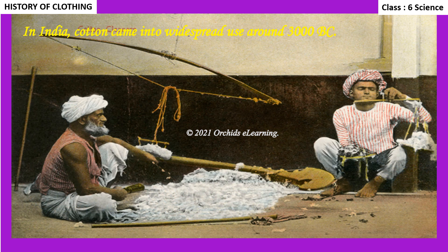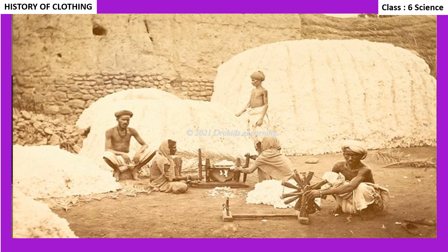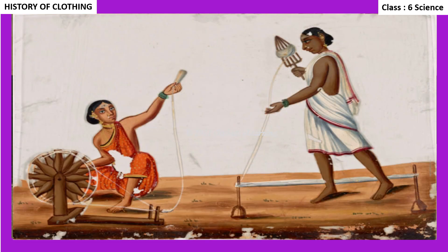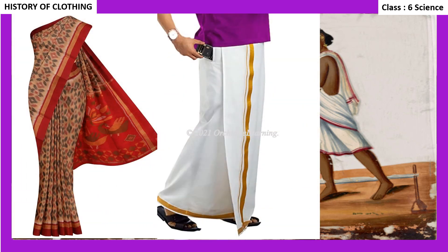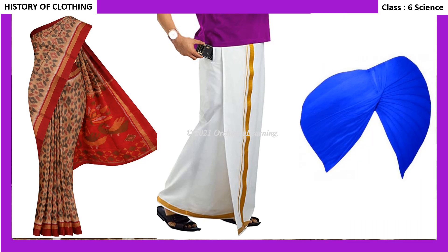These early fabrics were not stitched — they were just wrapped around the body. Even today, the saree, dhoti, and turban are unstitched pieces of cloth.